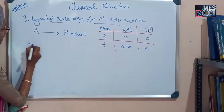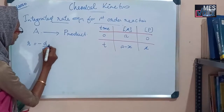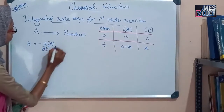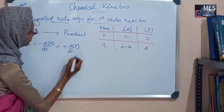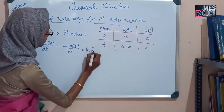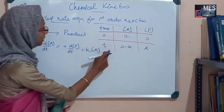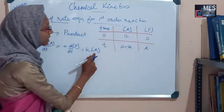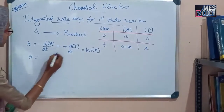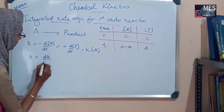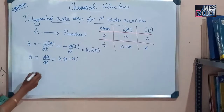Then, the rate of the reaction R is equal to minus d[A]/dt, or plus d[P]/dt, and this is equal to K into the concentration of A. Here, at the particular time T, the concentration of P is equal to X and the concentration of A is equal to A minus X. That is, at that instant, the rate of the reaction is equal to dx/dt is equal to K into (A minus X).